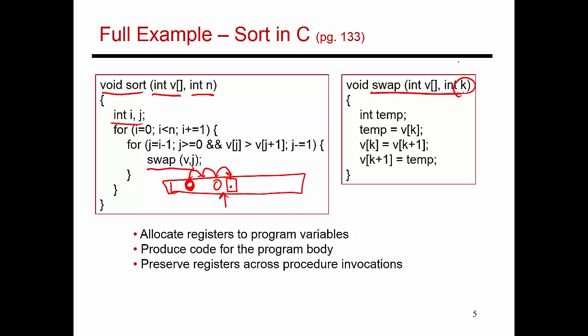The swap procedure itself is fairly simple. We all know how to do a classic swap. You bring vk into a temp value, then you place vk equals vk plus 1, and then vk plus 1 assumes the value of that temp location. This is how the C program operates. Now let's see how this gets converted into assembly code. As I said, I'm going to do it piece by piece.